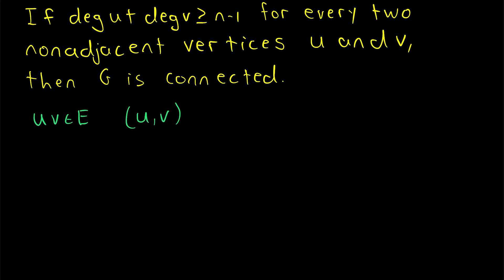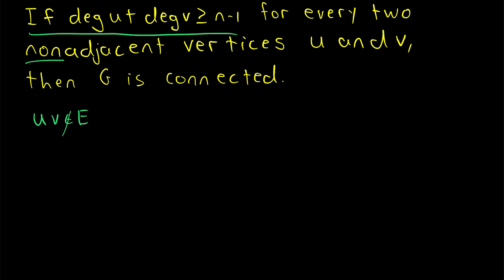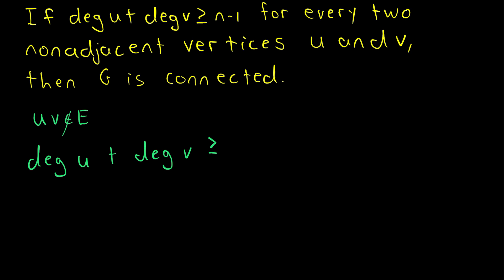then certainly u and v are connected by the path of length one going straight from u to v. All we have left to do is assume that the two vertices u and v are not adjacent, and show that they also must be connected. If u and v are not adjacent, we can use our hypothesis about non-adjacent vertices: that the degree of u plus the degree of v must be greater than or equal to n minus 1.